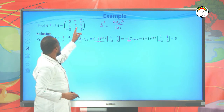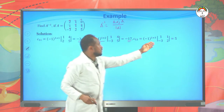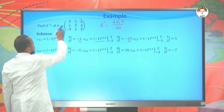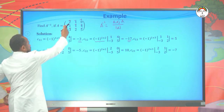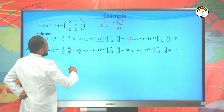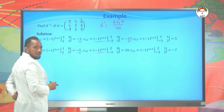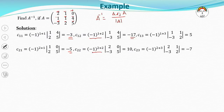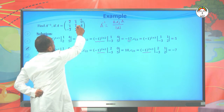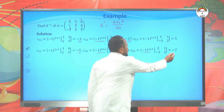For C₂₁, the sign is minus; cancel second row and first column to get [1, 0; 2, 5], giving negative 5. For C₂₂, sign is plus; cancel to get [2, 0; -3, 5], giving 10. For C₂₃, sign is minus; remaining matrix is [2, 1; -3, 2], giving minus 7. For C₃₁, sign is plus; cancel to get [1, 4; 1, 4] — wait, the remaining is [1, 0; 1, 4], giving 4. For C₃₂, sign is minus; remaining [2, 0; 1, 4] gives minus 8. For C₃₃, sign plus; remaining [2, 1; 1, 1] gives 1.